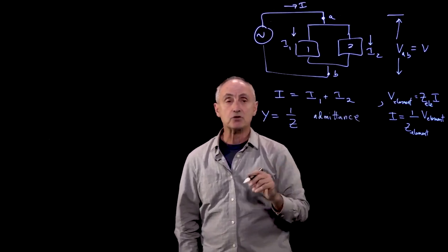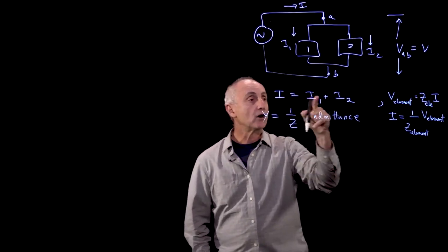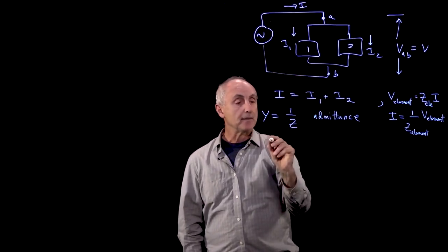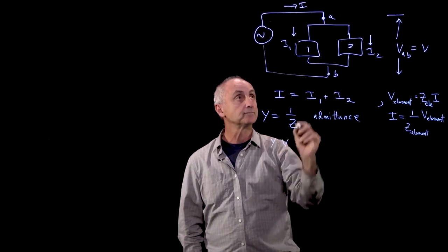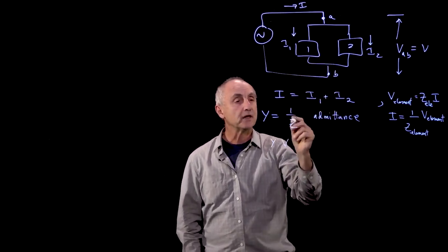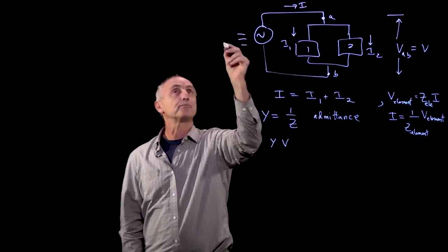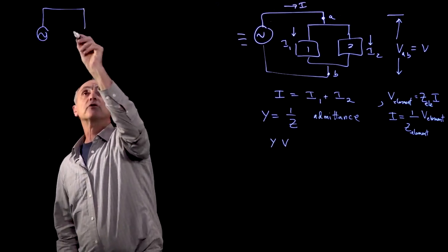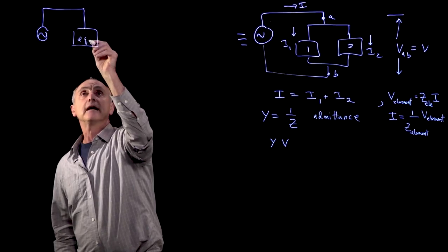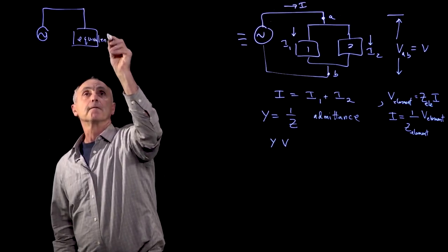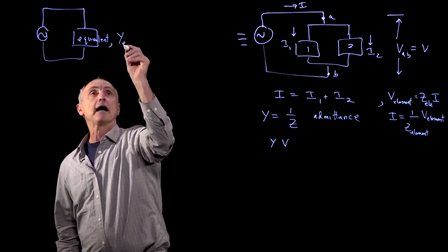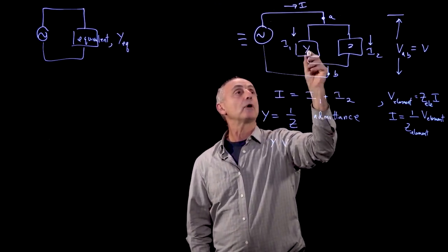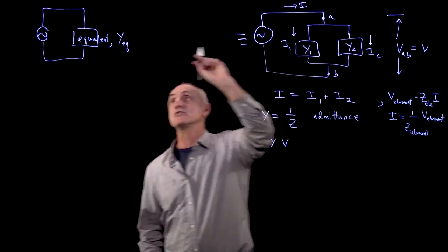It has dimensions of inverse ohms. We can write our current conservation equation as the admittance times the voltage. What we'd like to do here is write this as a circuit where our two elements become an equivalent element. This equivalent element has an equivalent impedance. We can write admittance 1 and admittance 2. This is the equivalent admittance.